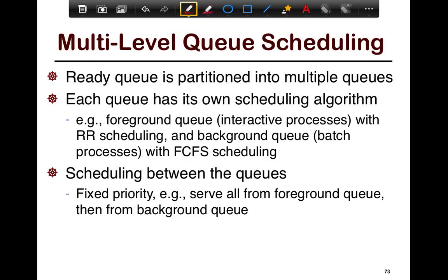A technique that's orthogonal to the scheduling algorithm itself is the number of queues used in the system — the multi-level queue. Up to now we've assumed that all the tasks line up in the same queue, but this is really suboptimal. If you think about it, you have different kinds of processes in the system: some are foreground, such as interactive processes, and some are background batch processes that are going to run for a long time. With foreground processes, response time is paramount; with background processes, average wait time is paramount.